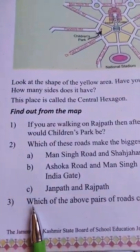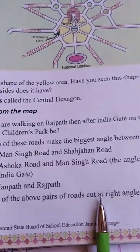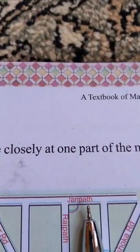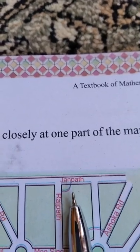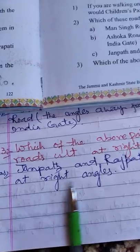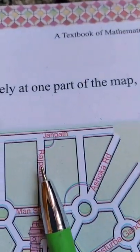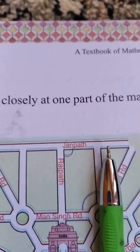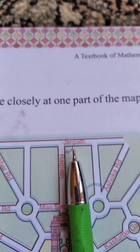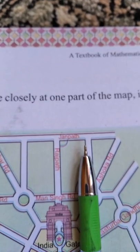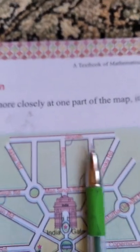Question number 3: which of the above pairs of roads cut at right angles? Janpath and Rajpath cut at right angles — 90 degree angles, L-shaped. So take a look at the preparation and look at the question. Thank you. Allah Hafiz.